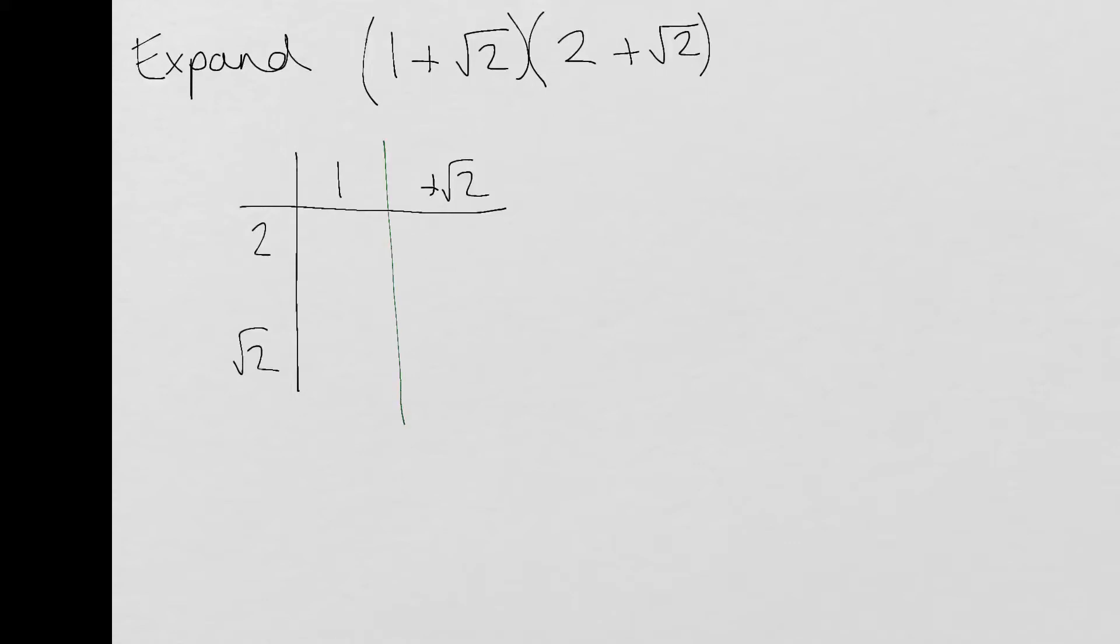I like to just do this as well to help keep it separated. So we're multiplying all of these together. 1 times by 2 is 2. 2 times by a positive √2 is going to give me plus 2√2. In this bracket here I'm going to get plus √2 because it's just 1 times by √2 there.